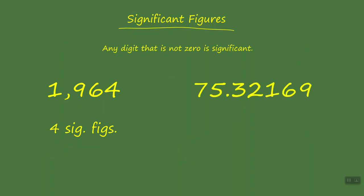In our second example, the value 75.32169 has a decimal point in it, but in this particular example the decimal point does not come into play. We have all non-zero digits. They all count, they are all significant, so we have a total of seven significant figures in this example.